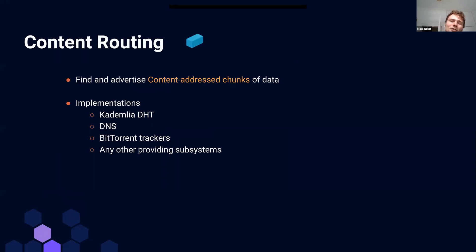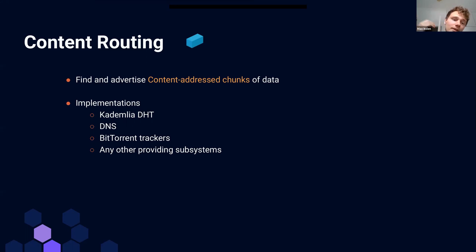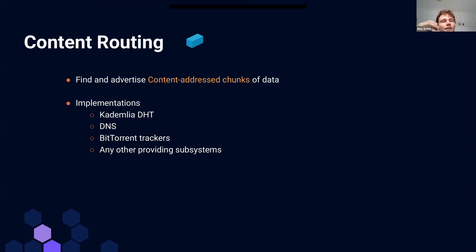The third building block beyond peer discovery and routing is content routing. While not as critical for our chat application specifically, it's very important in the IPFS world — the idea that we can find and advertise content-addressed chunks of data. In the chat world, this could be advertising membership in a group. Like transports, content routing can have many implementations: Kademlia can help, as can DNS, BitTorrent trackers, or any other providing subsystem.